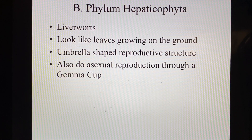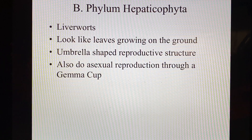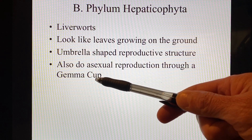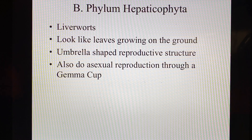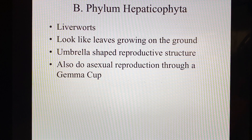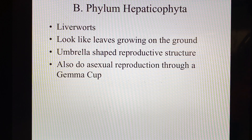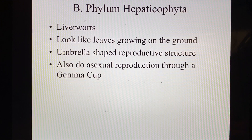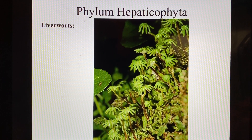They also do asexual reproduction through a gemma cup. So they normally do sexual reproduction through the umbrella structure, but they also have an asexual mode in the event that the sexual parameters are not available. So they can reproduce either way, which guarantees the continuation of the species — maybe part of the reason that liverworts are so common. They'll have spores in the gemma cup instead of seeds.